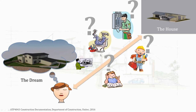Let's look quickly at our model, which shows the dream house. There's someone imagining their dream house, the final completed house, and the path in between. You can see that a number of people need information — the plumber needs to know what he needs to do, the electrician needs information, the builder needs information, and the architect or engineer also needs information to proceed with the work.